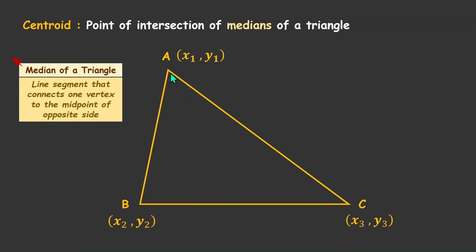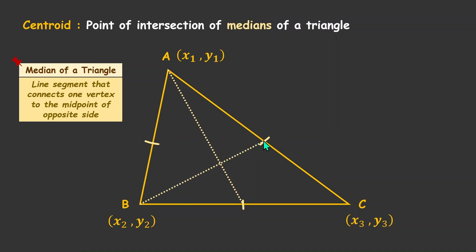So let's see it. Let's make our one vertex A. It is a line segment that connects one vertex to the midpoint of the opposite side. So let's say this is the midpoint of BC, this is the midpoint of AC, and this is the midpoint of AB. Then the line segment connecting A with the midpoint of BC is this — so this is one median. From B, this would be another median, and the third median would be this one. As you can see, all the medians intersect at one point, and this special point is what we call the centroid.